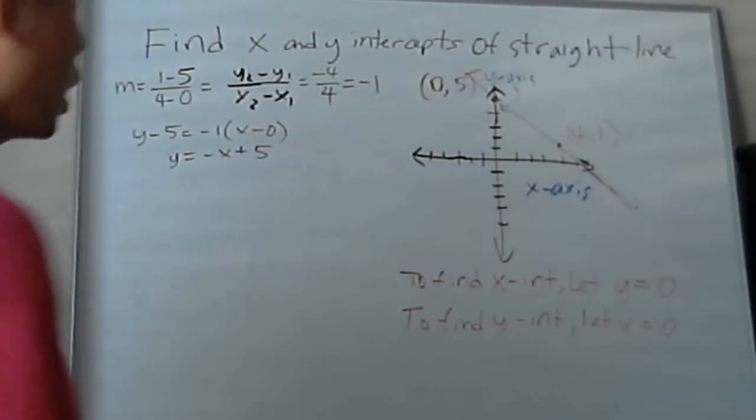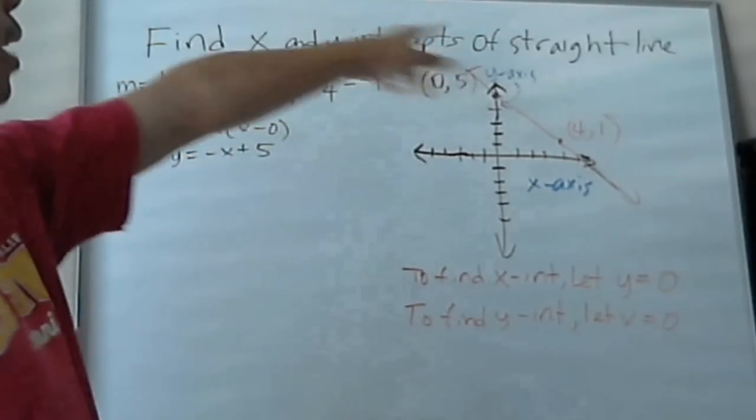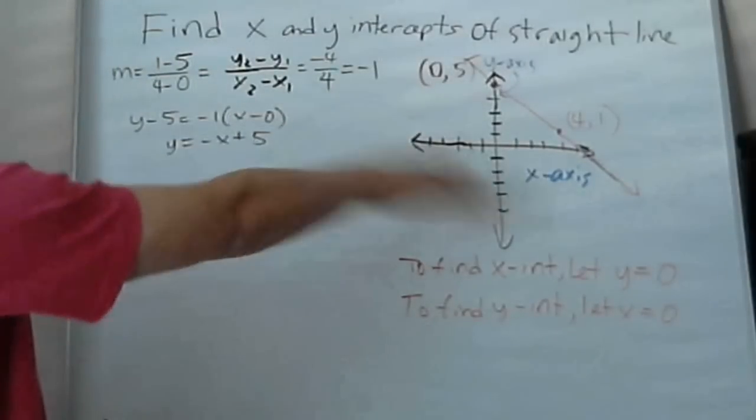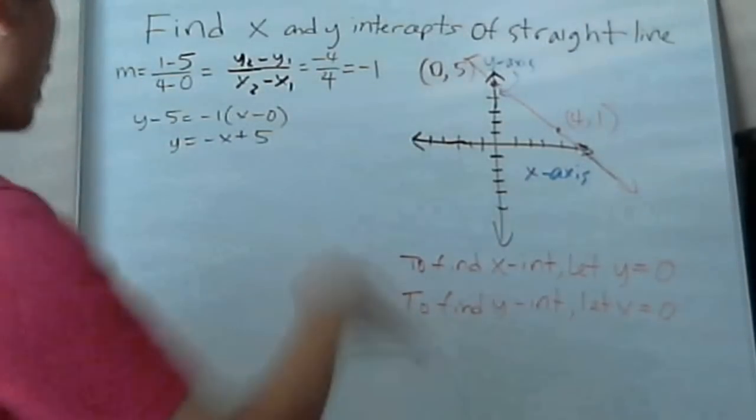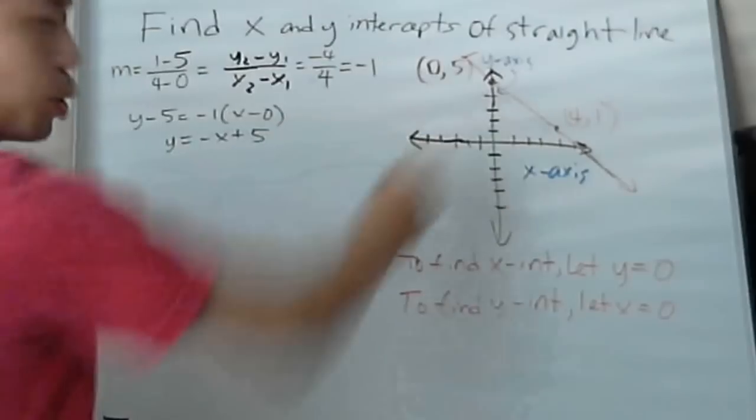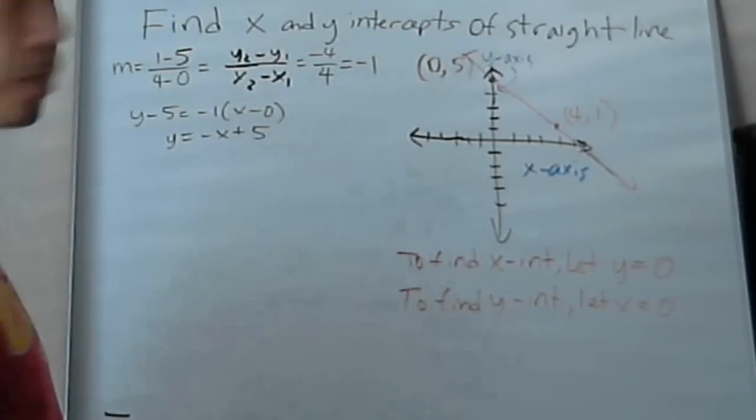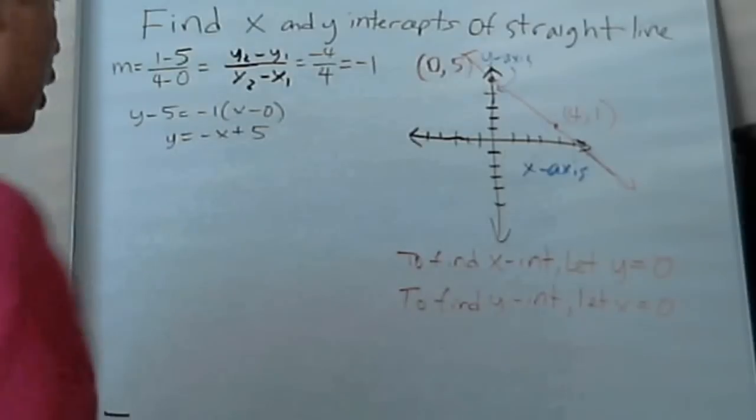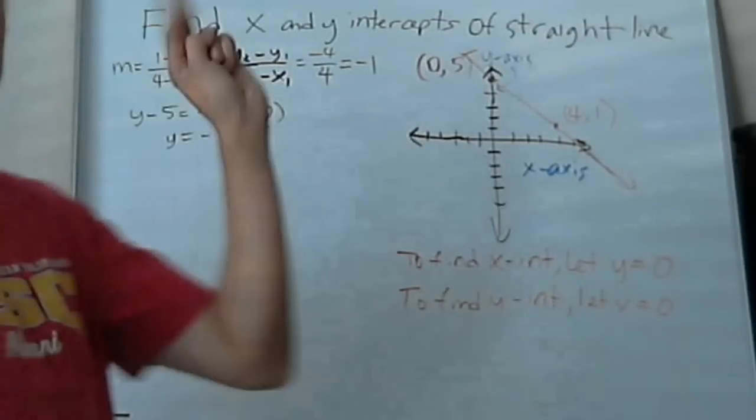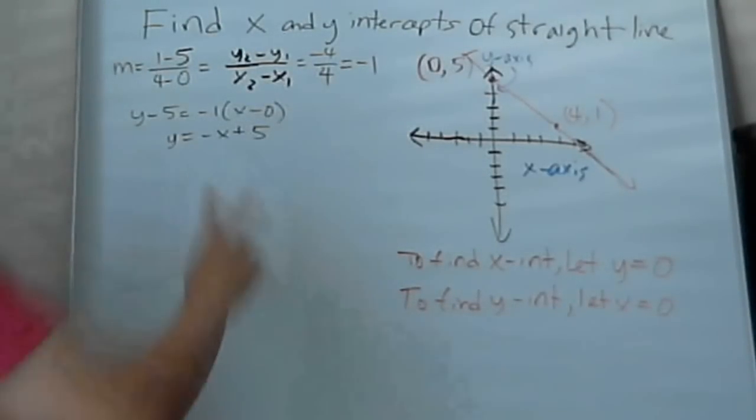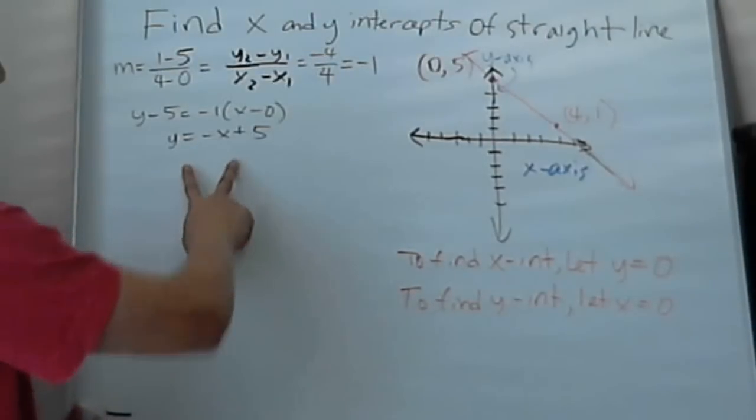Okay, in this lesson plan we're going to learn how to find the x and y intercepts of a straight line. I already went through and created this equation, and if you need to find out how I found the equation with these two points, you can look at my other video on how to find the equation of a line with two points. So I have an equation y equals negative x plus 5.